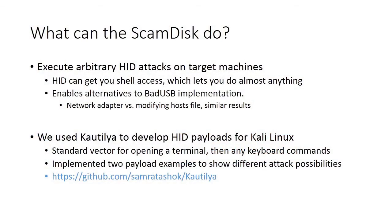So what can the ScamDisc do? It lets you execute arbitrary human interface device attacks by plugging it into a target machine. It executes keystrokes, which can then be used to get you shell access, which gets you almost anything you want. This enables alternative methods of achieving some of the same results shown in the Bad USB talk. For example, they reprogrammed a USB device to work as a network adapter for phishing, but you could do a similar attack by having the ScamDisc modify the target's host file, redirecting a site to a server that you control.